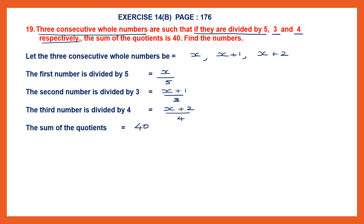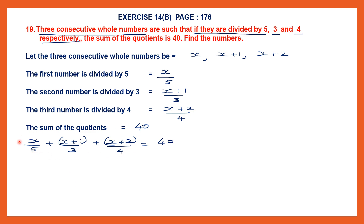Let's work that out. So we have x by 5 plus (x plus 1) by 3 plus (x plus 2) by 4, all equal to 40. As you can see, these are unlike fractions, so we have to find the LCM of 5, 3 and 4.